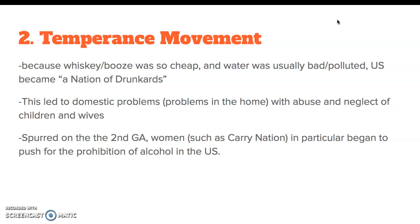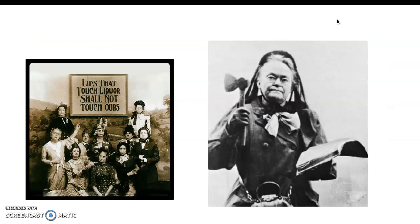The temperance movement was spurred on by the Second Great Awakening. Women such as Carrie Nation in particular began to push for the prohibition of alcohol in the United States. Carrie Nation, pictured with her trademark tomahawk in one hand and a Bible in the other, was about six feet tall — really tall for the day, especially for a woman — and she would go into saloons with a gang of women and destroy whiskey bottles and barrels, tearing up taverns and bars throughout the regions she went. She's a terrifying but very forceful figure.